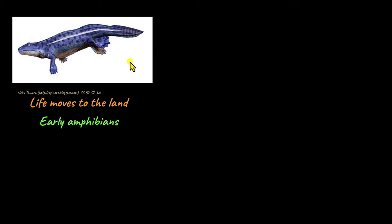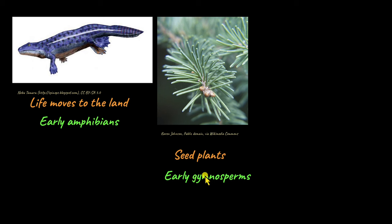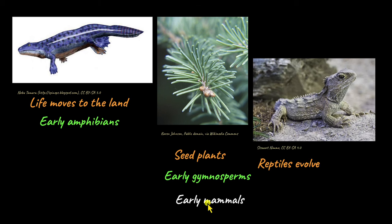As animals moved to land, plants were also evolving. Early non-vascular plants evolved into vascular seed plants — early gymnosperms that produced seeds and dispersed them widely. There was a kind of co-evolution between seed plants and animals on land, since the animals needed something to eat. This made a lot of food available for land animals, and eventually early mammals and early reptiles evolved alongside seed plants on Earth.